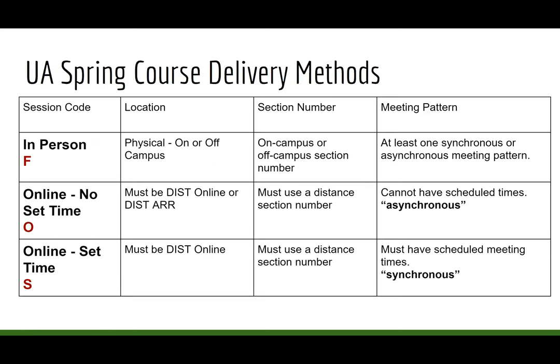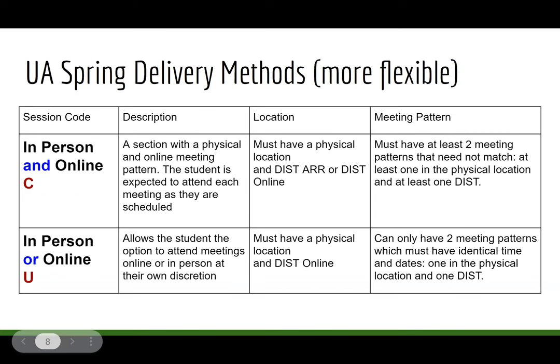Unpacking these a little bit more, I've included some descriptions here. I'm going to focus on the two new, more flexible options and think about how these might fit with your particular students and course, as well as the overall plan for your program. For C — in-person and online — the student is expected to attend each meeting as scheduled. Versus U — in-person or online — where the student has the option of attending meetings online or in-person.